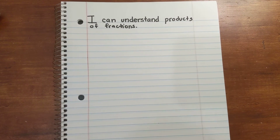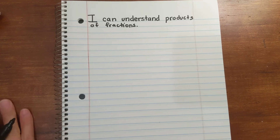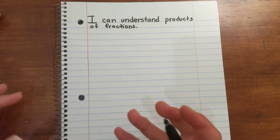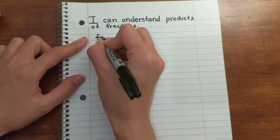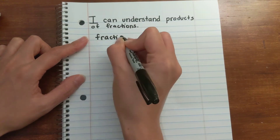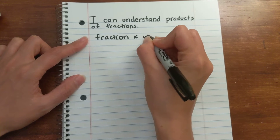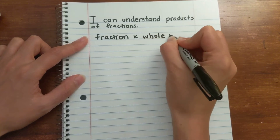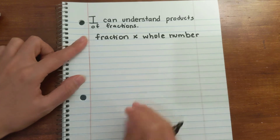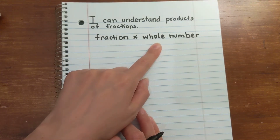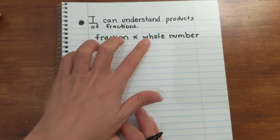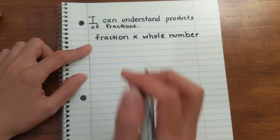The I can for today is: I can understand products of fractions. So let's start with some vocabulary to tie in with the fractions. Let's start off with looking at a fraction multiplied by a whole number. When you have a fraction multiplied by a whole number, you can think of it from the traditional point of view — when you have two whole numbers, you can think 'groups of.'